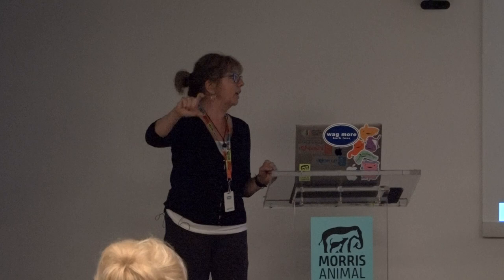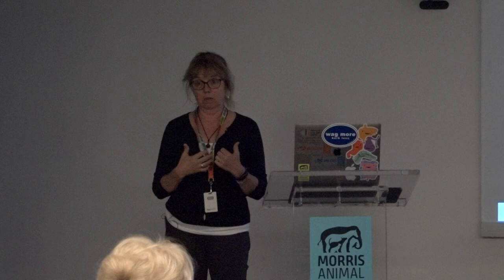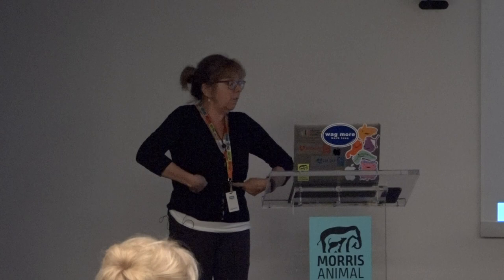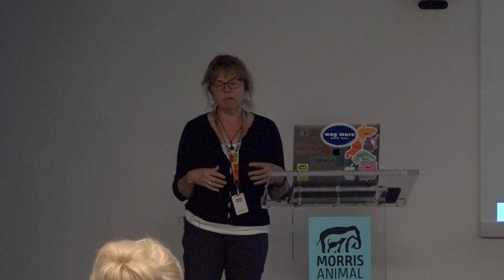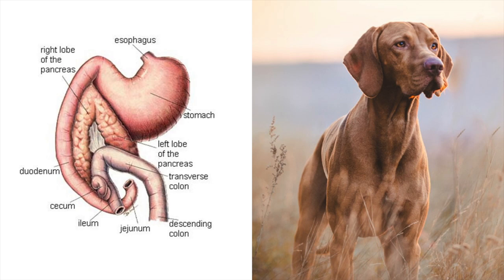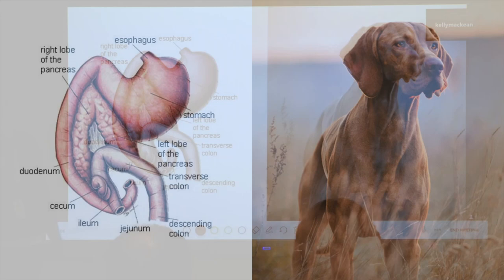Food goes down the esophagus, which is a muscular tube that empties into the stomach beneath the diaphragm. The esophagus goes through the thorax, and diseases of the chest can affect the esophagus. Once it empties into the stomach below the ribcage, the liver, stomach, and pancreas all contribute digestive enzymes to the process, then it goes to the large intestine and out.